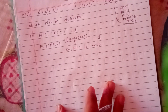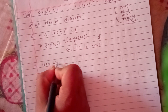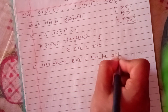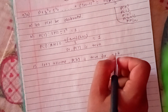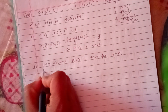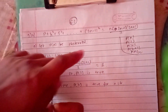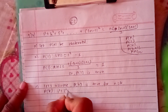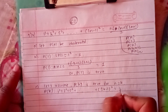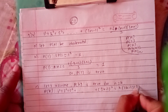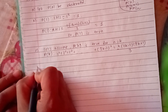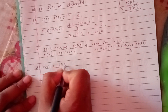Third step: let us assume P(k) is true, where n equals k. If P(k) is true, we have: 1 square plus 3 square plus 5 square plus dot dot plus (2k minus 1) square equals k(2k minus 1) by 3. This is our inductive hypothesis.